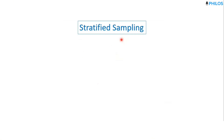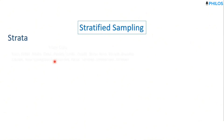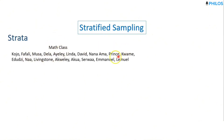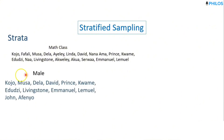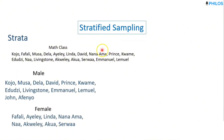Next is stratified sampling. For stratified sampling, we divide the population into subgroups called strata based on a particular characteristic, such as age or gender. For example, consider a maths class as the population. We divide the class into subgroups by gender. The total population is 20, with 12 males and 8 females.